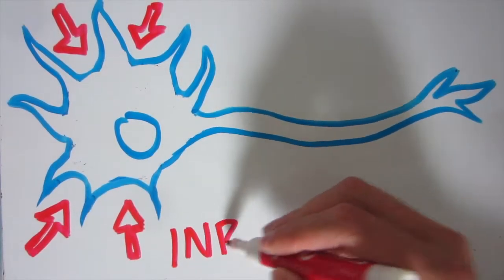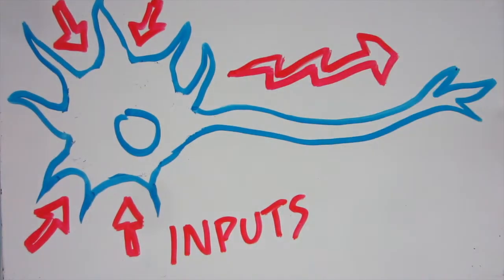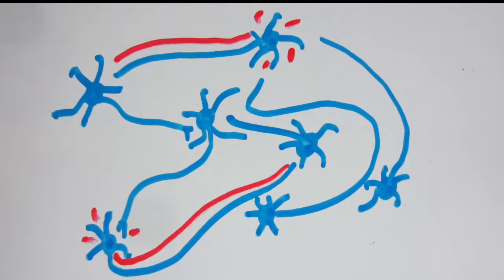The dendrites can be thought of as the inputs, collecting electrical signals and bringing them to the cell body. If the neuron gets enough input, it fires a pulse of energy down its axon. This signal can then be picked up by the dendrites of other neurons. This can happen hundreds of times a second, and the resulting networks give rise to all of your experiences.